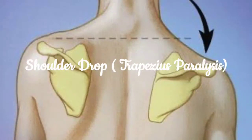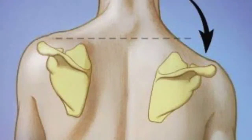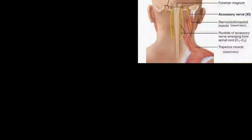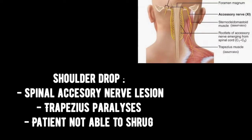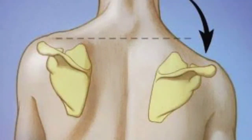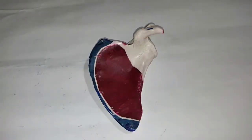Abduction beyond 120 degrees — achieved by scapular rotation — is also not possible with winging of the scapula. Third: shoulder drop occurs because of paralysis of the trapezius muscle. Trapezius is supplied by the spinal accessory nerve, the only cranial nerve that supplies muscles of the back, including the trapezius and sternocleidomastoid. With a lesion in this nerve, trapezius is paralyzed and the person cannot lift their shoulders when shrugging, resulting in a visible drop of the shoulders.